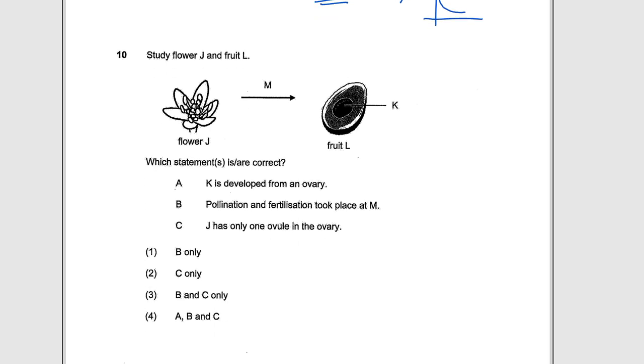Number ten. Study flower G and fruit L. We have the flower and we have a fruit that looks something like an avocado. Which statements are correct? K is developed from an ovary. Now K is the inner portion of the fruit, so this is the seed. It's a single seed, like a mango or an avocado. So K is developed from an ovary. This is wrong. Seeds originally come from the ovules. If you have one seed, you have one ovule. If you have many seeds, you have many ovules. So many seeds, think of watermelon, papaya. Pollination and fertilization took place at M. Yes, this is correct. You need to pollinate the flower and then fertilize the ovary. And then you will have fruit that develops. J only has one ovule in the ovary. This is also true. We only see one seed here. So the answer is going to be number three.